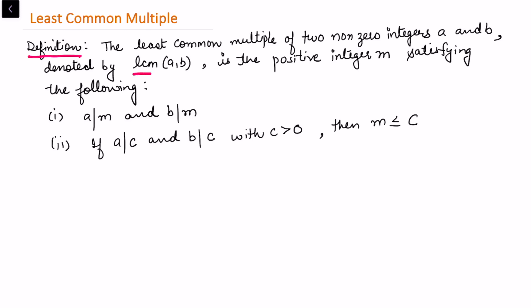a and b denoted by lcm(a,b) is the positive integer m satisfying the following two conditions: first, a divides m and b divides m; and if a also divides c, any another arbitrary integer, and b also divides c with c strictly positive, then m is considered least positive if m is always less than or equal to c.